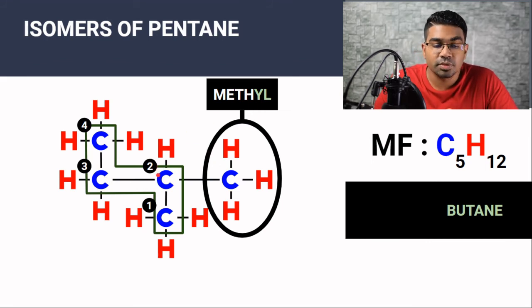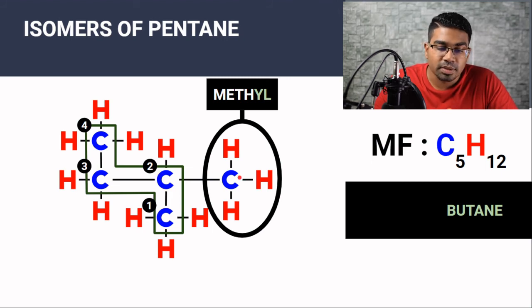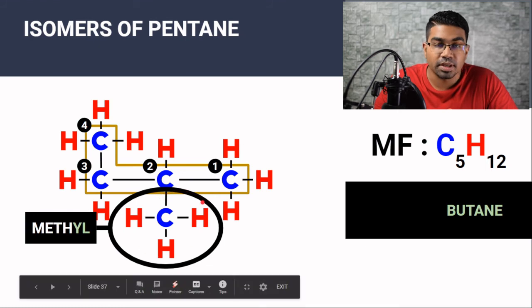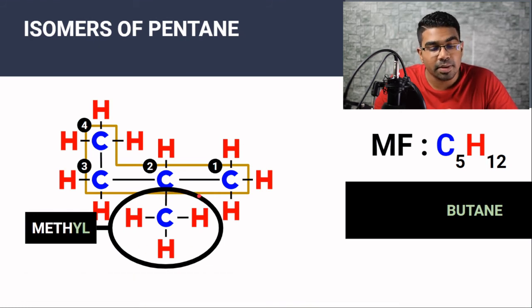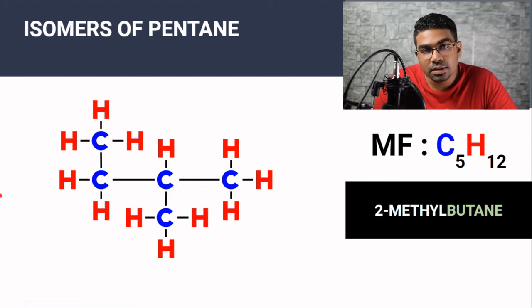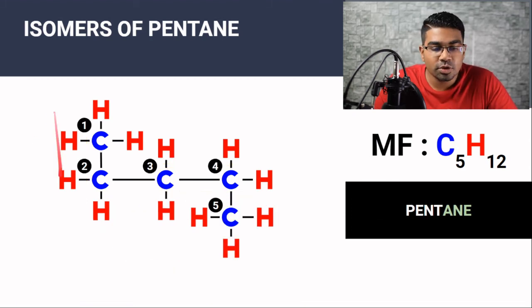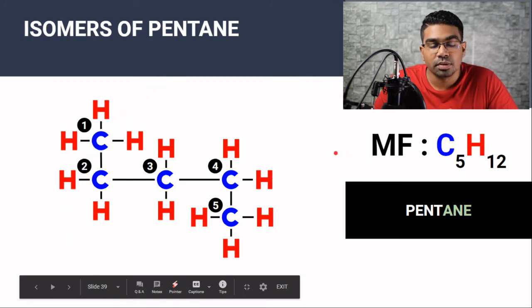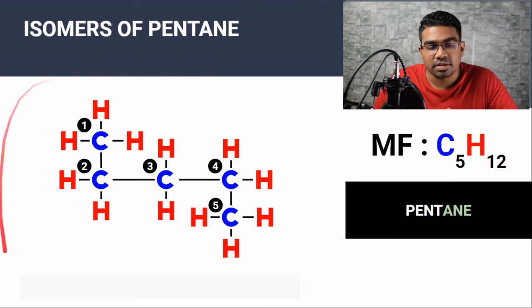So this is actually 2-methylbutane. We can also take a different part as the longest chain, making the other carbon the branch — and notice that we get the same name: carbon number two with a methyl group attached, therefore still 2-methylbutane. The same goes for this structure — this may look like a different molecule, but the whole thing actually forms a single chain, so this is just pentane.